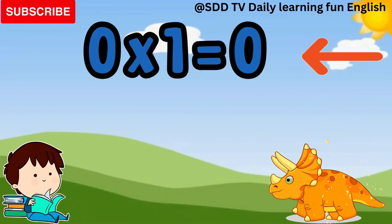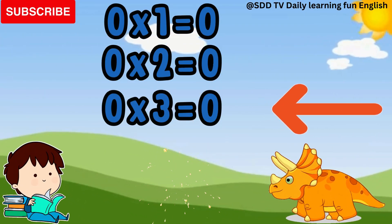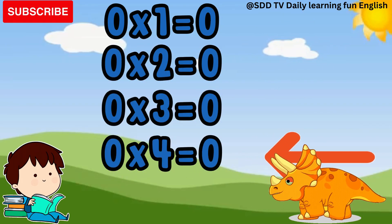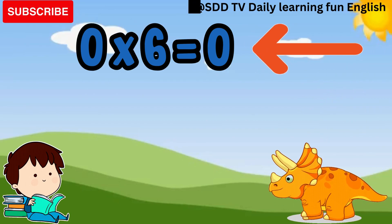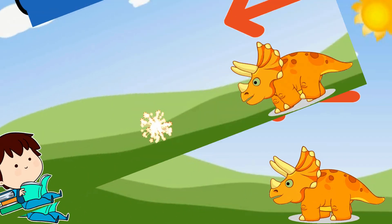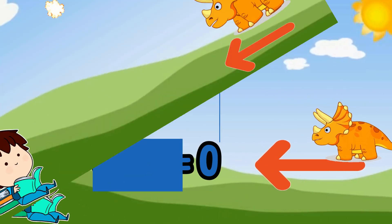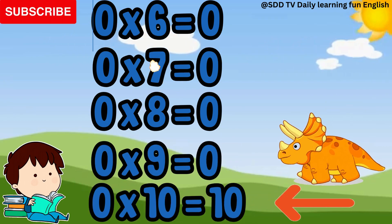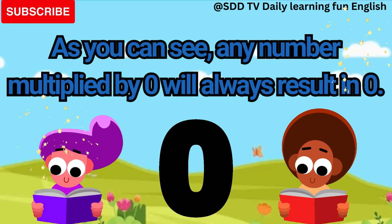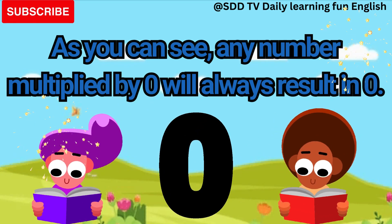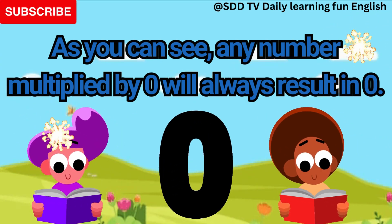We are going to learn the table of zero again: zero ones are zero, zero twos are zero, zero threes are zero, zero fours are zero, zero fives are zero, zero sixes are zero, zero sevens are zero, zero eights are zero, zero nines are zero, zero tens are zero. As you can see, any number multiplied by zero will always result in zero.